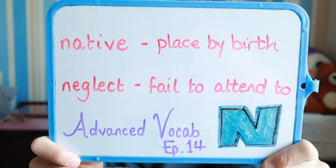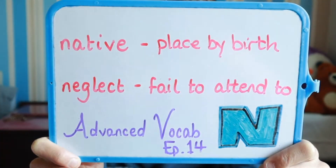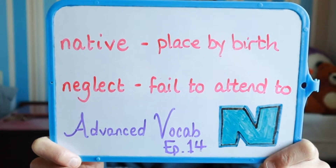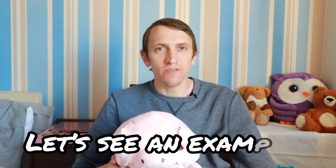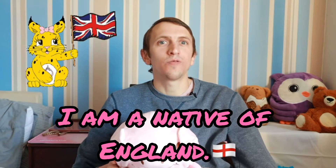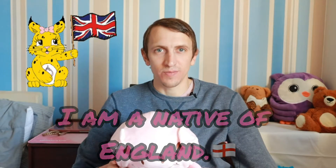Now let's take a look at the first advanced vocabulary word. The first word is 'native' and it means your place of birth. For example: I am a native of England.